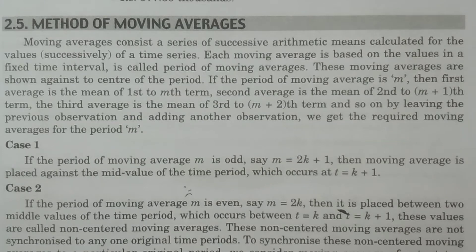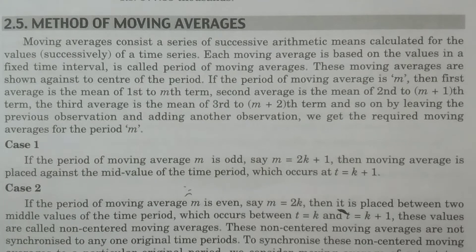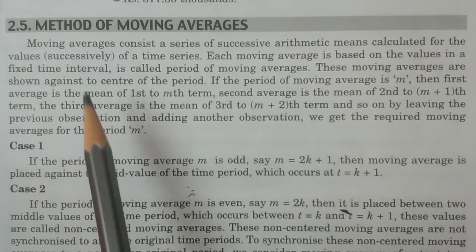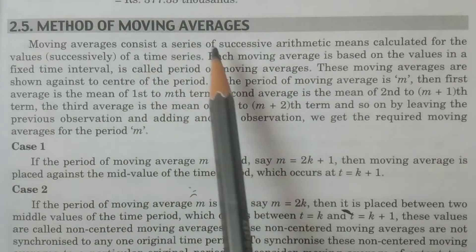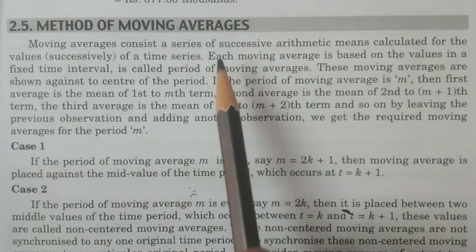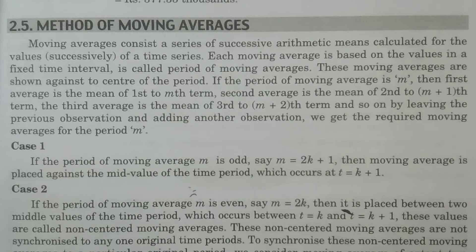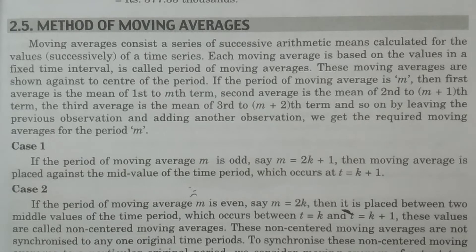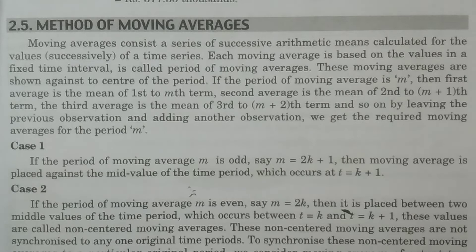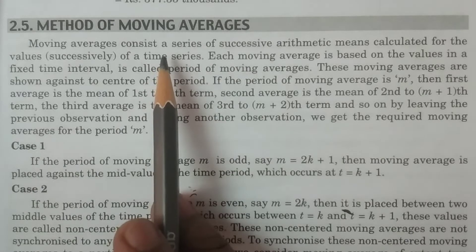Welcome to B.Sc. Statistics students. In this lesson, I explain the method of moving averages. This is one of the methods to find the long-term fluctuations in a time series data. The principle of least squares is one method; method of moving averages is another method.